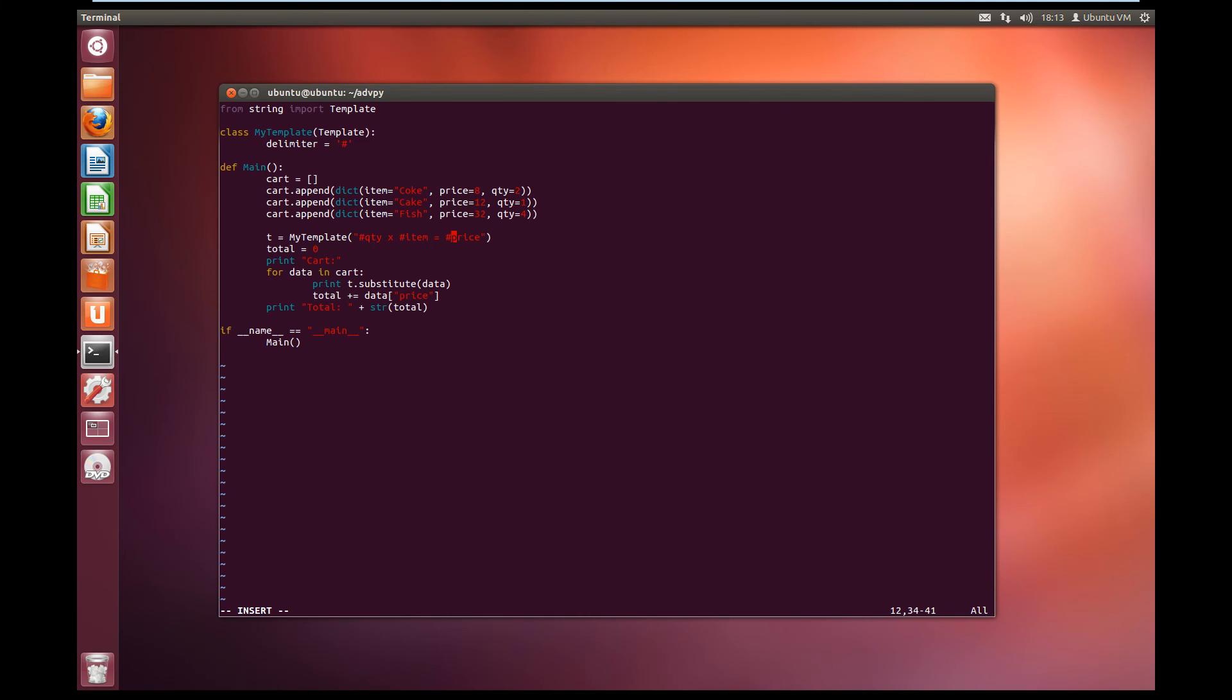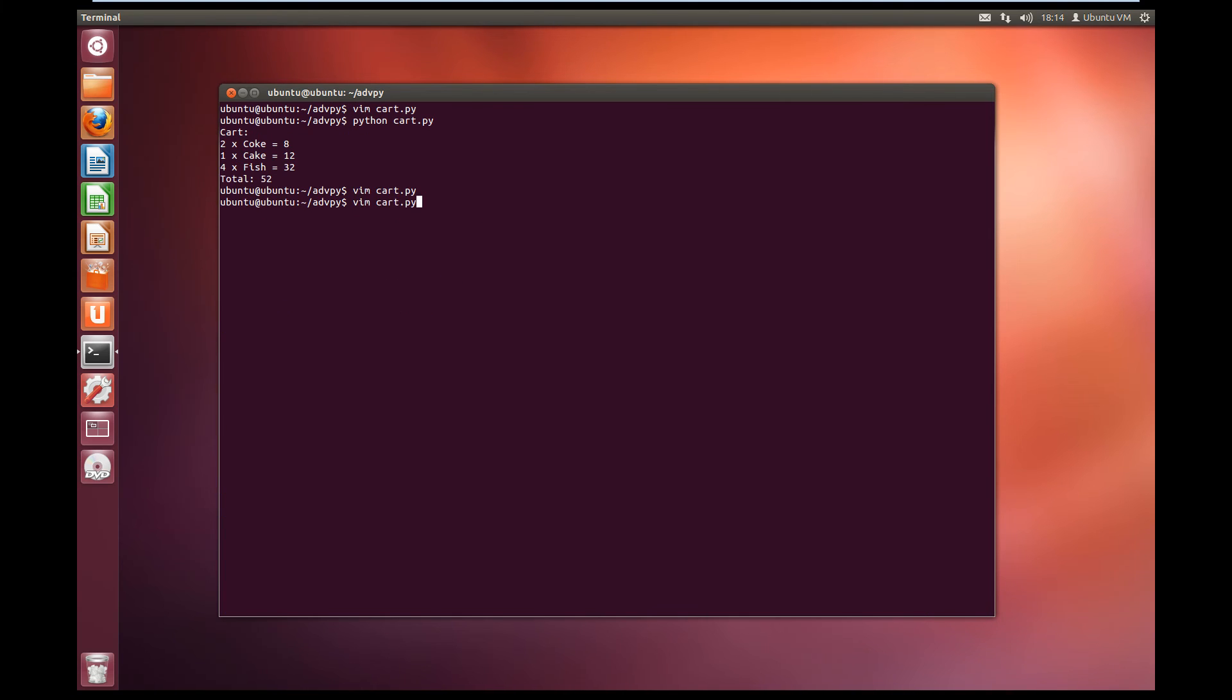And instead of using dollar signs, we'll use our hash symbol that we've set up. So we've got hash quantity x hash item equals hash price. And this will substitute our values in, but we're using the hash delimiter this time. So let's save this and run it. We should get the same output if everything worked correctly. And there we go. So you don't have to use the dollar sign, it's the default. So if you're going to be using something that the user may be creating a template, hashtags are pretty common these days, or even using the percent sign is pretty common.